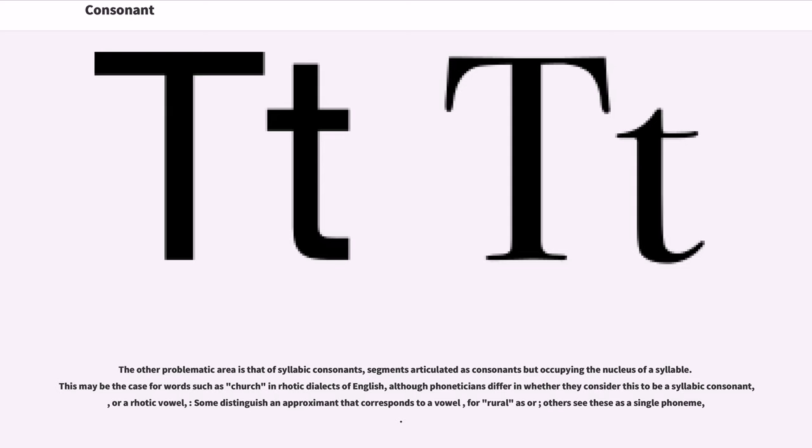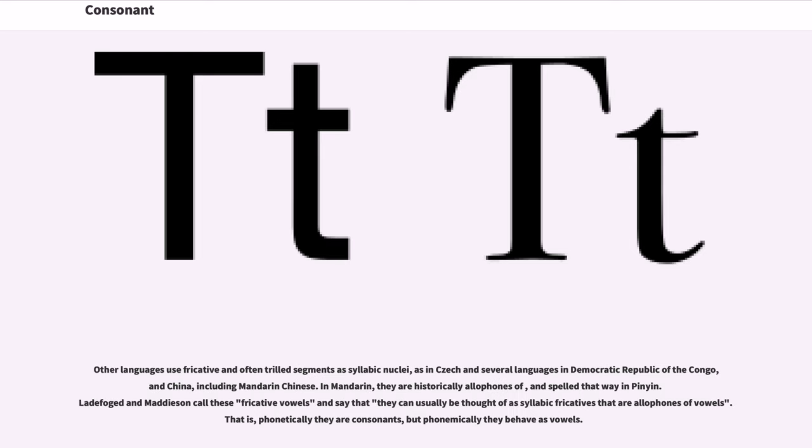Some distinguish an approximant that corresponds to a vowel, for 'rural' as /rʊrəl/ or /rɚl/, others see these as a single phoneme. Other languages use fricatives and often trilled segments as syllabic nuclei, as in Czech and several languages in Democratic Republic of the Congo and China, including Mandarin Chinese. In Mandarin, they are historically allophones of /i/ and spelled that way in Pinyin. Ladefoged and Maddieson call these fricative vowels and say that they can usually be thought of as syllabic fricatives that are allophones of vowels. That is, phonetically they are consonants, but phonemically they behave as vowels.